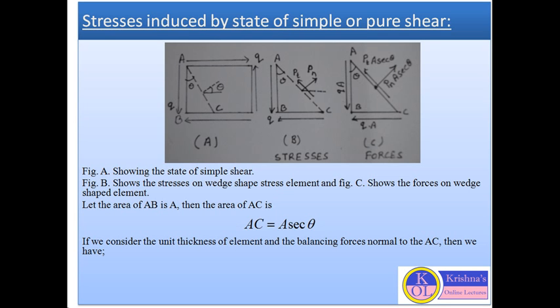If we consider the area of plane AB as A, we can easily calculate the area of AC, which will be A·sec θ, as seen from diagram B. Considering unit thickness of the element and balancing all the forces in the direction normal to AC.